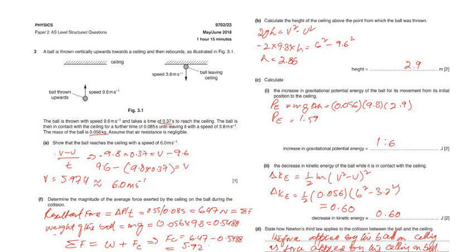The ball is thrown with a speed of 9.6 meters per second and takes a time of 0.037 seconds to reach the ceiling. The ball is then in contact with the ceiling for a further time of 0.085 seconds, leaving it with a speed of 3.8 meters per second. The mass of the ball is 0.056 kilograms.